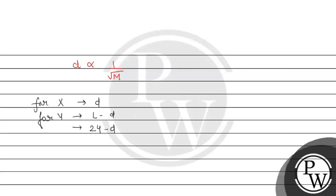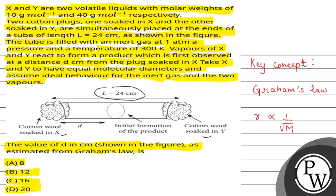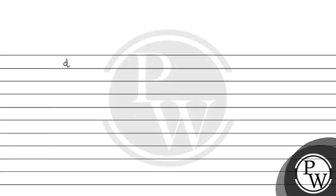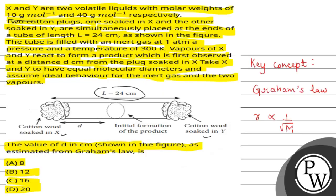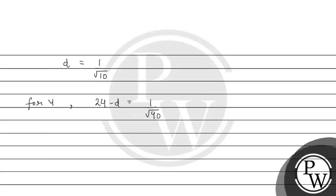So from here, I can say that d will be inversely proportional to the square root of the molar weight. We can say that d is equal to 1 upon under root of 10. And for Y, we can say that 24 minus d will be equal to 1 upon under root of 40. If we consider this equation 1 and we consider this equation 2.